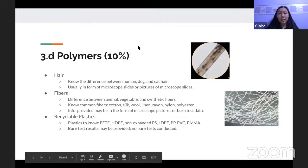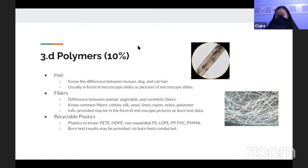Okay, so the second part of the evidence is polymers, which takes up 10% of the exam. So, there will be three types of polymers you'll have to know about: hair, fibers, and recyclable plastics. So, for hair, they'll be asking you to distinguish between human, dog, and cat hair.